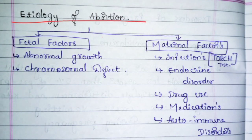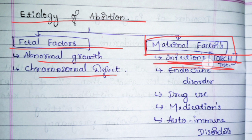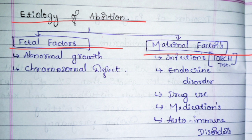In fetal factors, causes are abnormal growth and chromosomal defects. If the baby is not growing well or there is a defect, it leads to abortion. The main cause is maternal. Generally abortion is due to infection — to check for infection we perform the TORCH test. TORCH stands for Toxoplasma gondii, cytomegalovirus, herpes virus, and rubella virus.